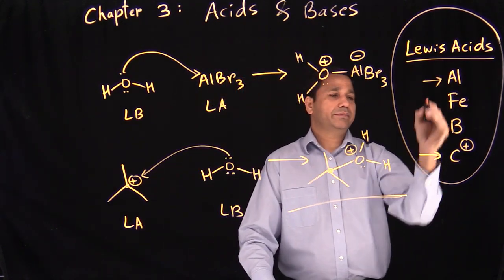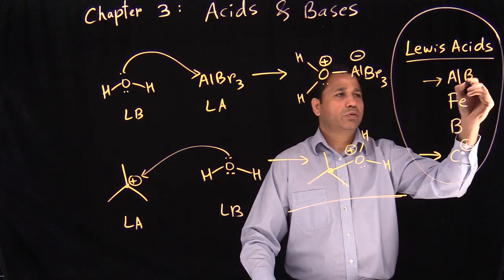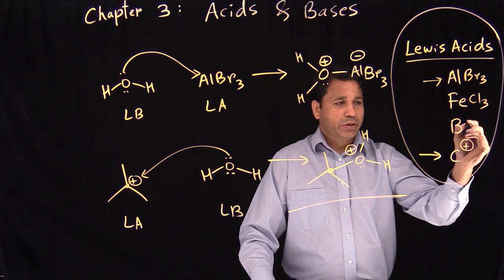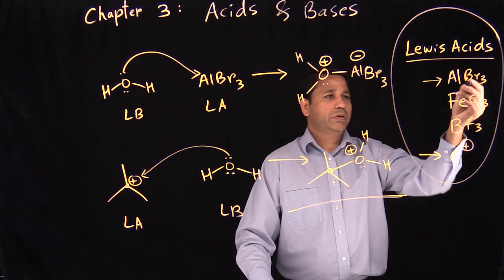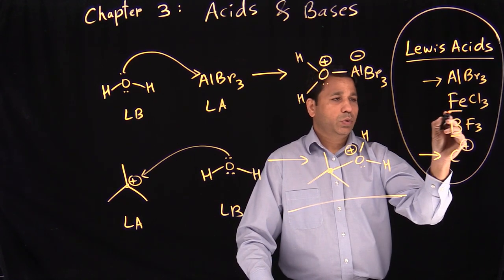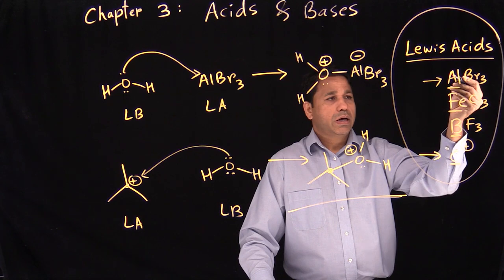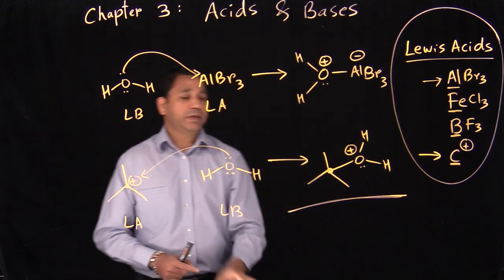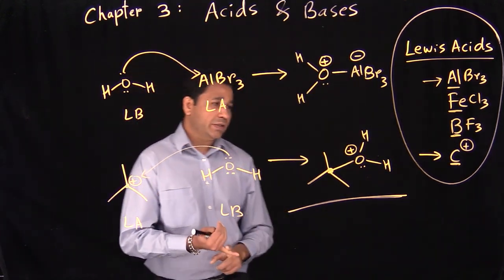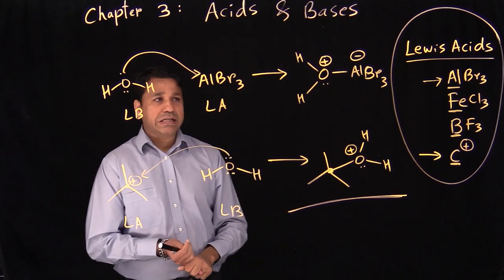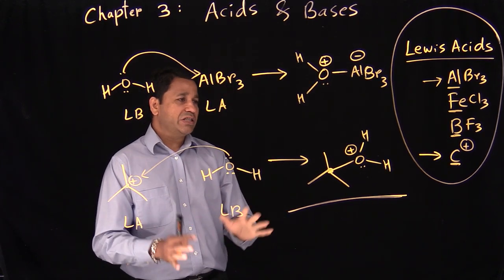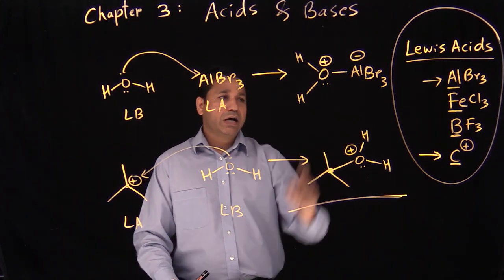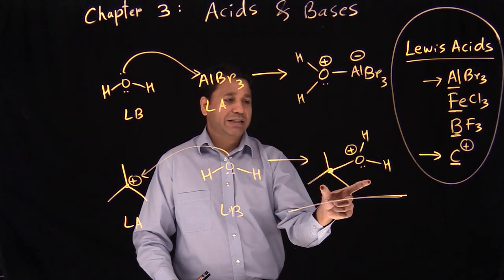We saw all the examples with aluminum and boron — AlBr3, AlCl3, FeCl3, and BF3 all work the same way. You're looking at your Lewis acid center, which is either aluminum, iron, boron, or carbon. That's our last category of Lewis acids and bases. We learned two different theories: Bronsted acids and bases, and Lewis acids and bases. Don't forget that in the case of Lewis acids, we don't have a conjugate acid and conjugate base — we only get one product.